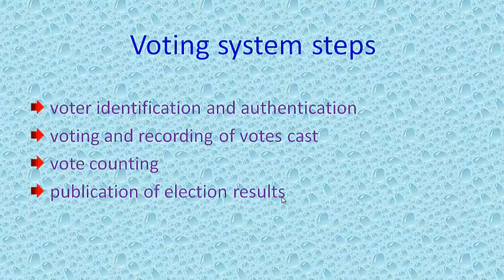The further steps are voting and recording of votes cast — whatever votes are cast will be recorded. Finally, vote counting takes place once voting is over, and then the results of the election are declared. This is generally called the voting system stages.